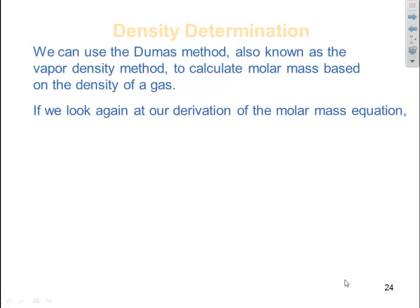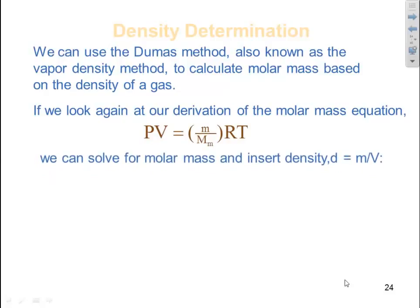We can use the Dumas method, also known as the vapor density method, to calculate molar mass based on the density of a gas. If we look again at our derivation of the molar mass equation, PV is equal to m over molar mass RT, we can solve for molar mass and insert density for mass over volume which is what density is. So we get molar mass is equal to mass times R times T divided by VP. And all we did was we brought our molar mass over here, our PV over here.